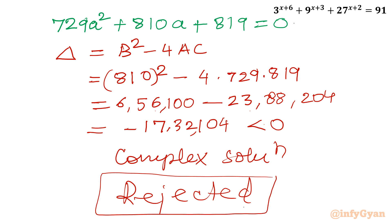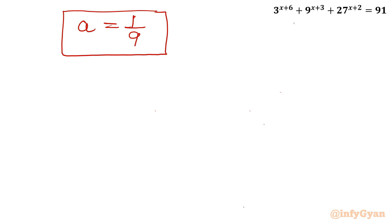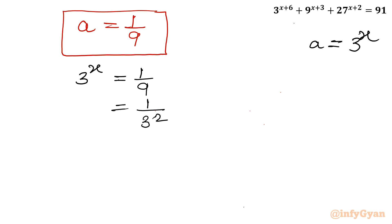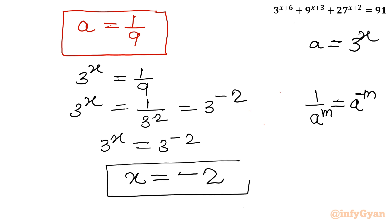The accepted solution is a = 1/9 = 1/3^2. Now substituting back using a = 3^x, we get 3^x = 1/9 = 1/3^2 = 3^(−2). Comparing exponents on both sides: x = −2 is our only real solution.